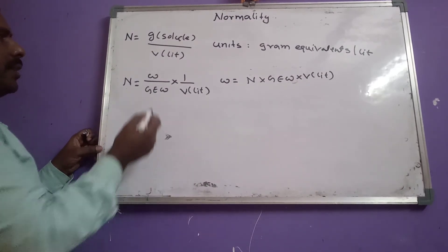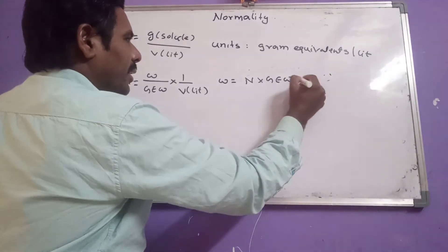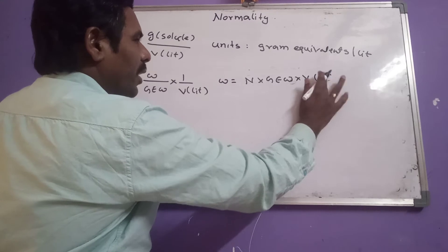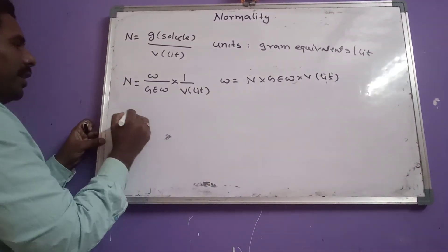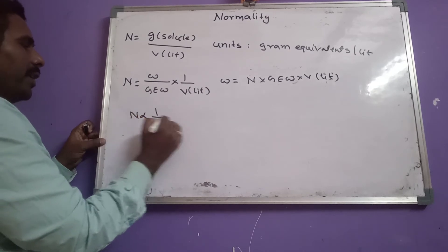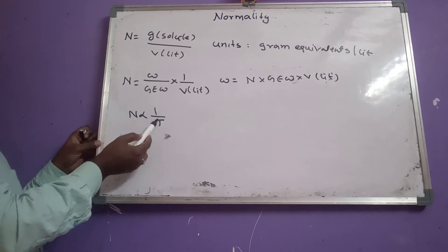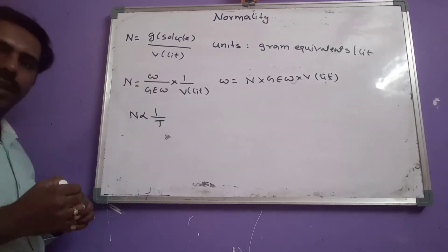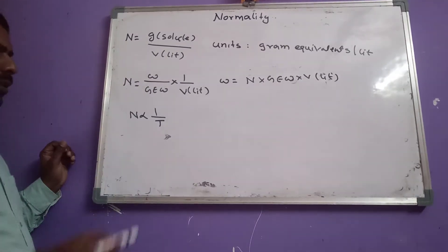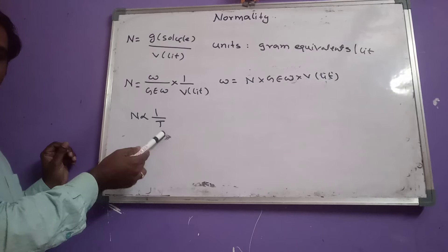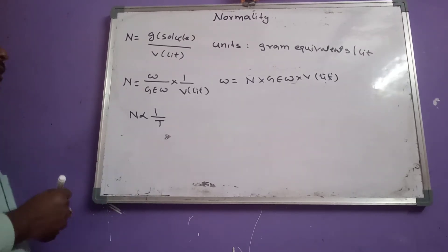From this formula, we can also get the weight formula: weight equals normality into gram equivalent weight into volume in liters. Also, normality is inversely proportional to temperature — same as in the case of molarity. Because as temperature increases, volume of a solution increases, and as volume increases, normality decreases.